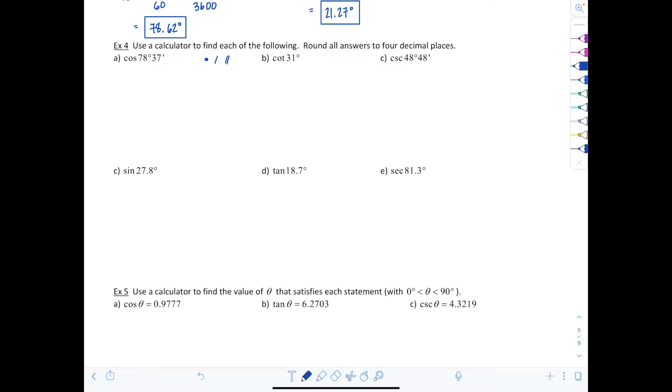First things first, make sure your calculator is in degree mode. It should say a D on the screen somewhere, not an R, DEG not rad. Make sure you're in degrees, then select degrees and minutes and seconds appropriately. Find cosine on your calculator, punch in 78, select the degree sign, then 37, select the minute sign and hit equals. We're rounding these to four decimal places. You should end up with 0.1974.